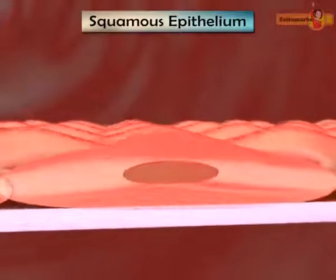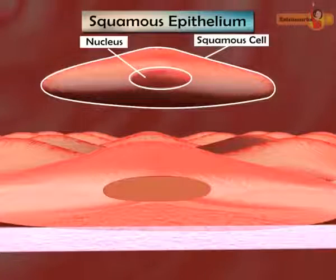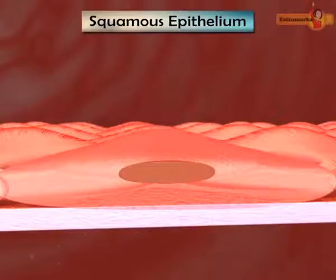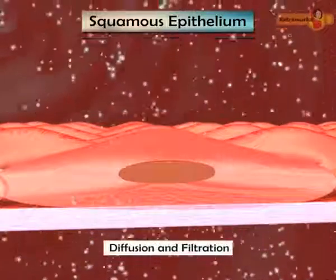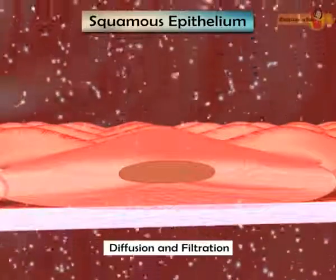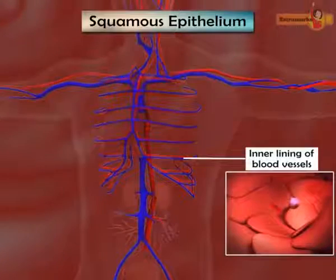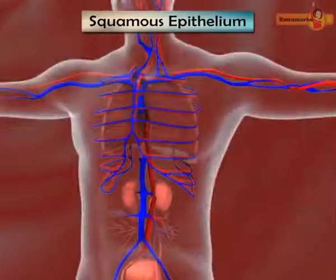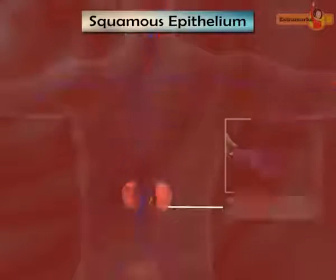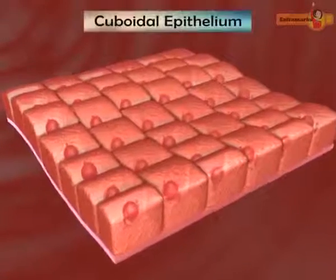Squamous epithelium tissue is composed of a single layer of flattened cells resting on the basement membrane, with a disc-shaped central nucleus and sparse cytoplasm. It is the simplest of the epithelia and allows diffusion and filtration of substances across it. Squamous epithelium is located at the inner lining of blood vessels, alveoli in lungs, and Bowman's capsule in the kidney.